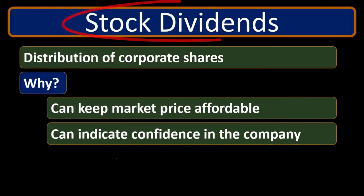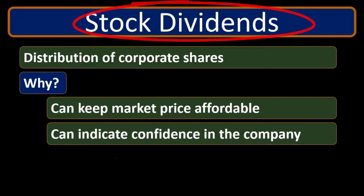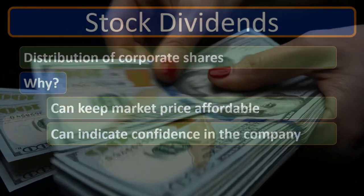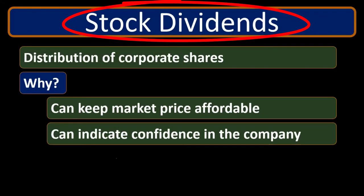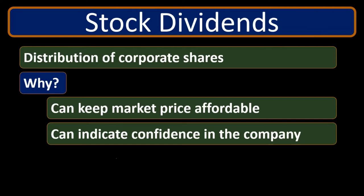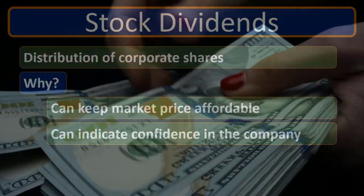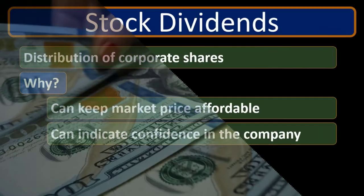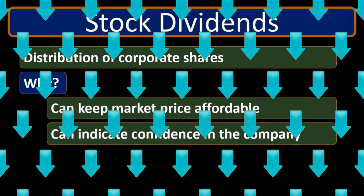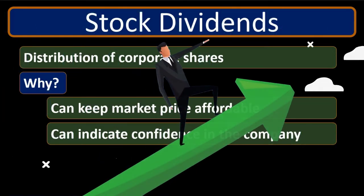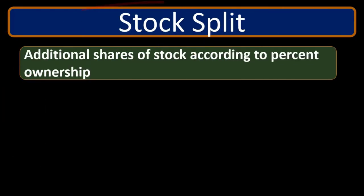A stock dividend would be similar to a two-step transaction: the company gives a cash dividend, reducing retained earnings and giving cash to the owners, and then the owners take that cash and purchase stock, putting it back into the company, increasing the equity section. There would be no net effect on cash — the cash goes to stockholders and then back to the company. The end result is just that retained earnings goes down and the common stock side goes up.